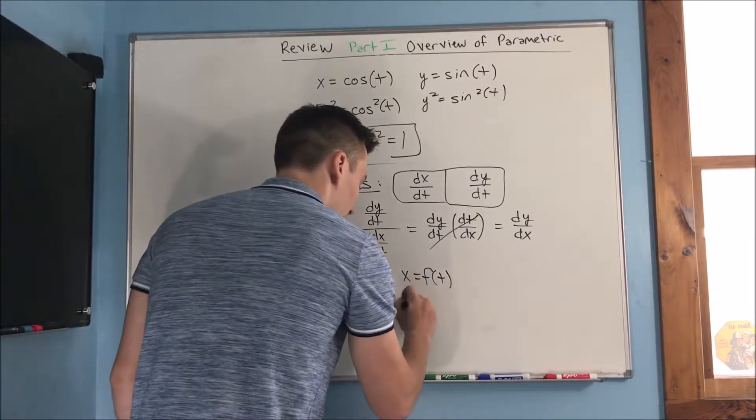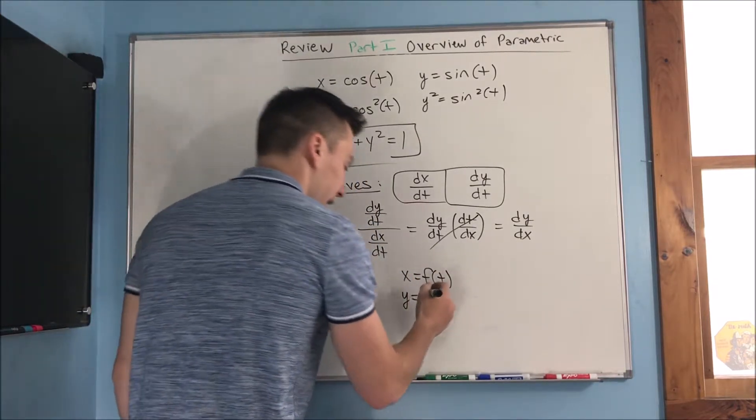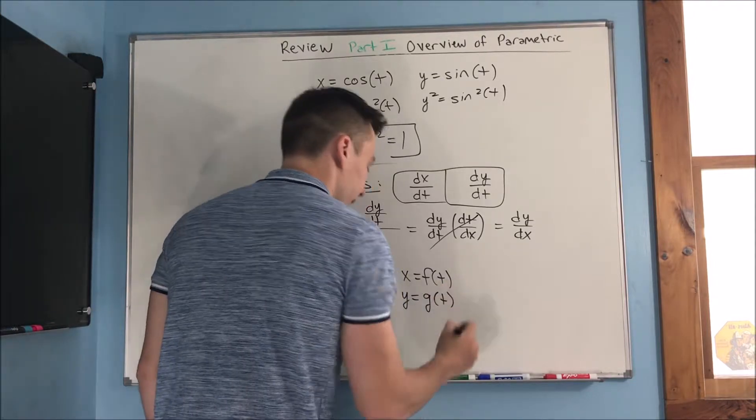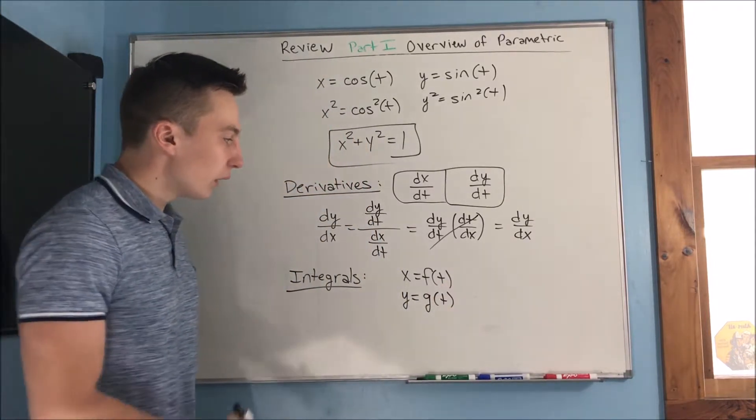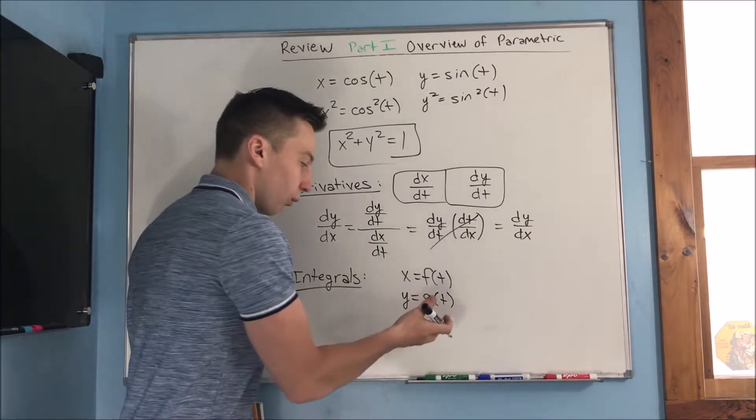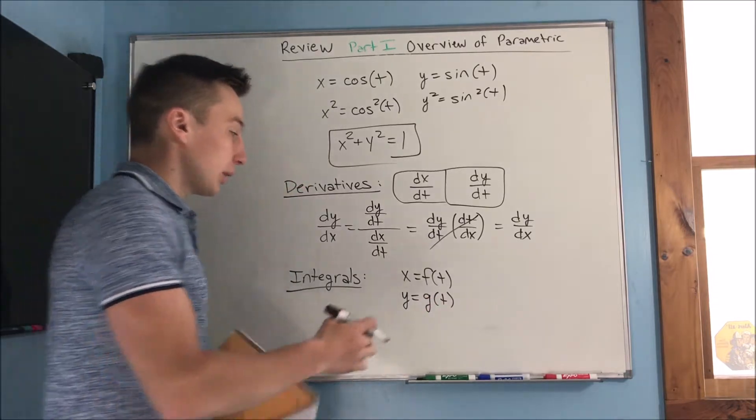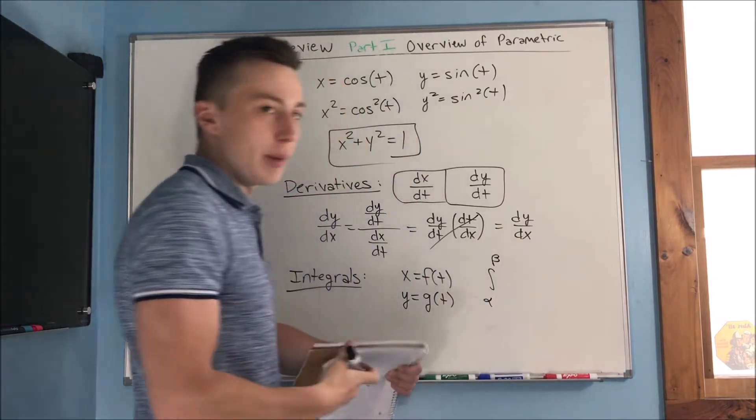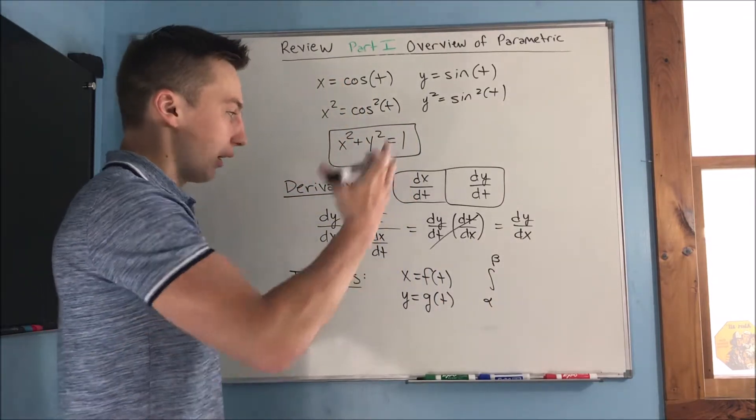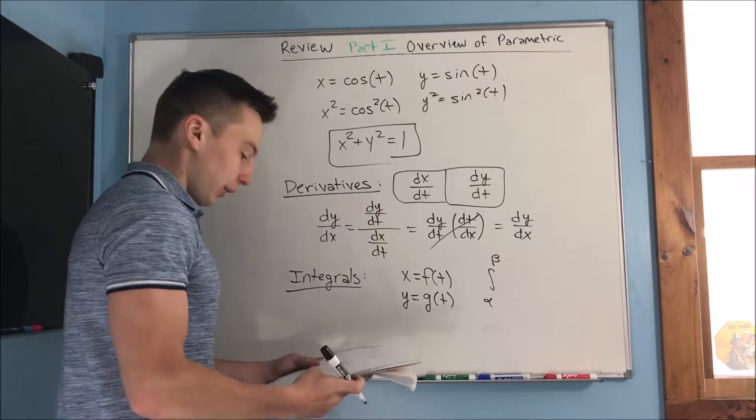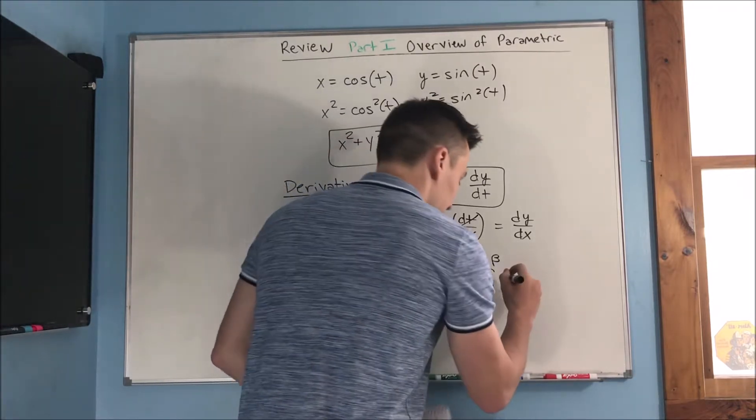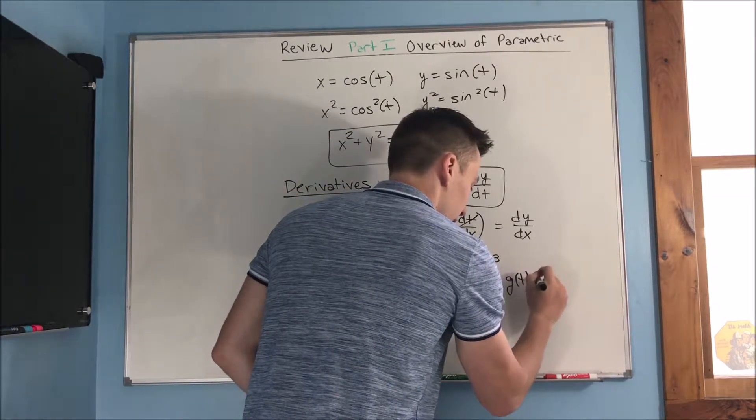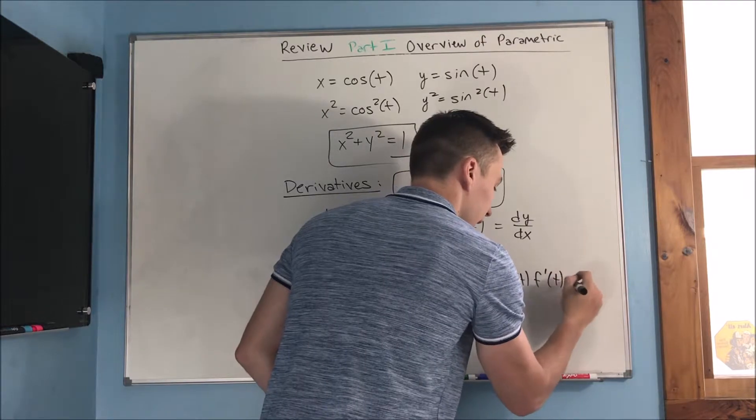And y as the function g of t. So when we did that, we were able to use the substitution rule, the integral from alpha to beta, so just new bounds. Don't get scared because they're different letters.